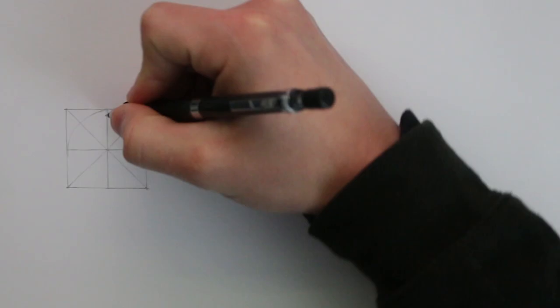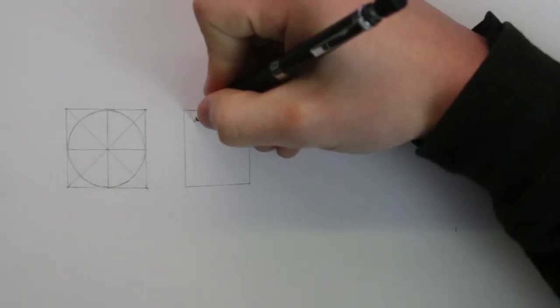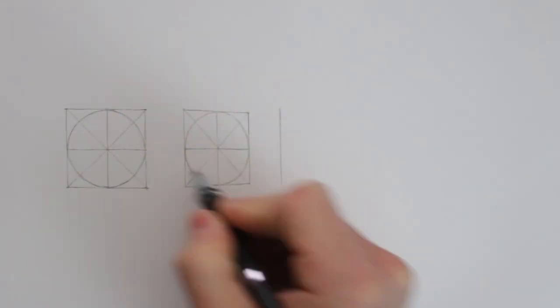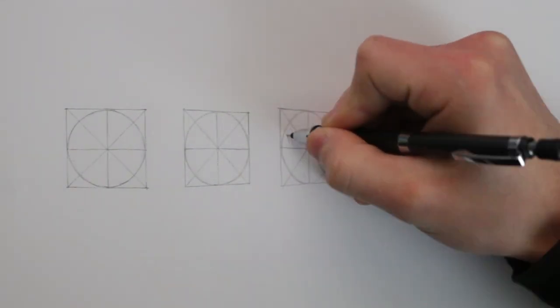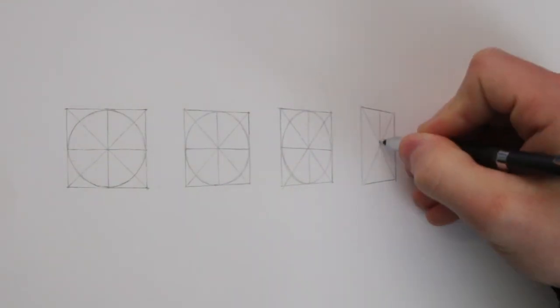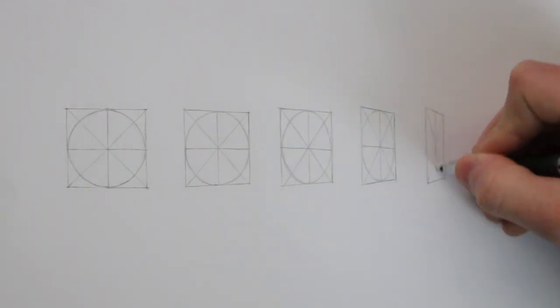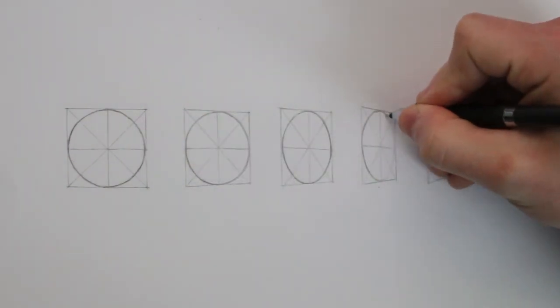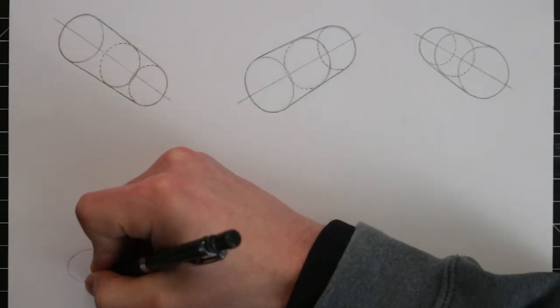We know that ellipses are just circles viewed in perspective. Now the width of an ellipse is often referred to as the degree, because it represents the angle of the circle relative to the viewer. As you can see here, the circle furthest to the left is at 90 degrees, and is perpendicular to us, but as it starts to rotate around, it appears as an ellipse, and the degree of the ellipse changes, appearing smaller in width. This is simple, but important to know, because we can use ellipses at different degrees to show how an organic form is twisting and turning in perspective.